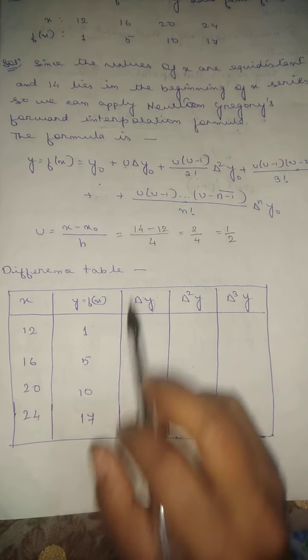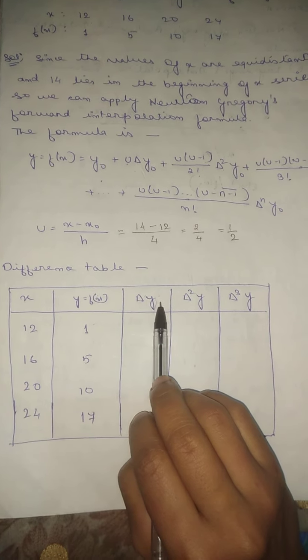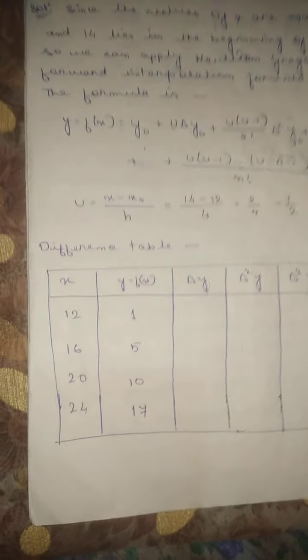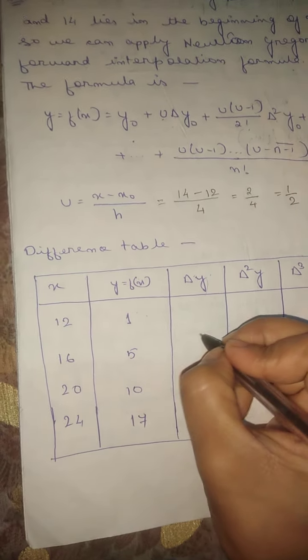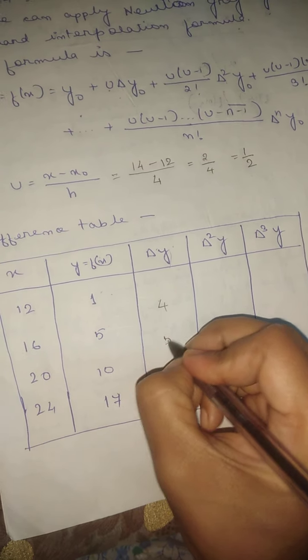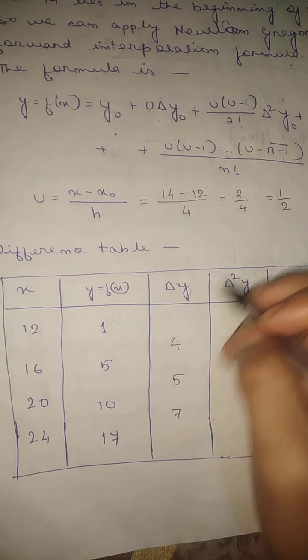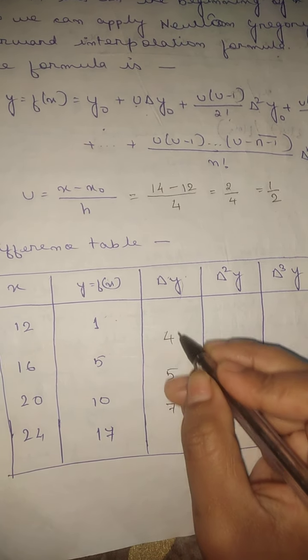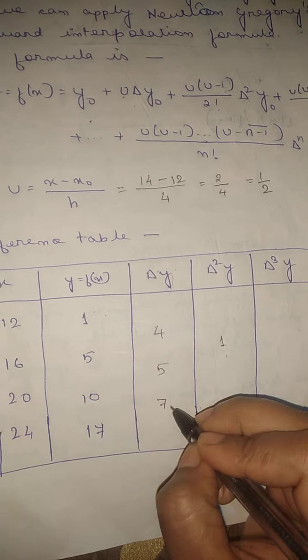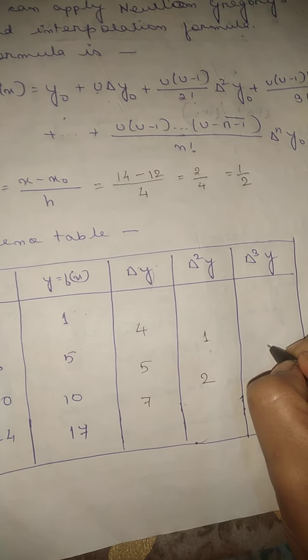Now I will build the difference table. The columns are: x, y, Δy, Δ²y, and Δ³y. First differences: 5 - 1 = 4, 10 - 5 = 5, 17 - 10 = 7. Second differences: 5 - 4 = 1, 7 - 5 = 2. Third difference: 2 - 1 = 1.